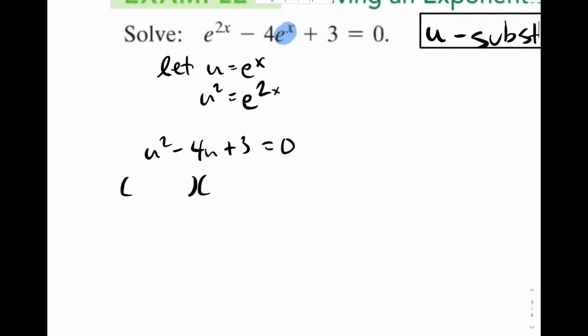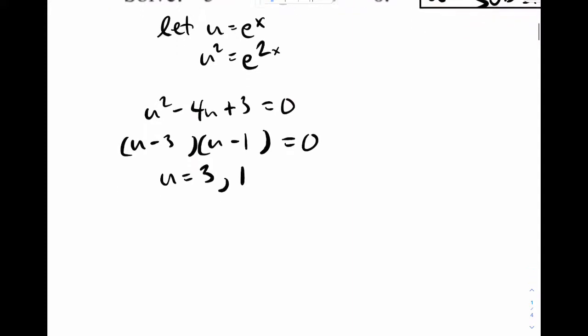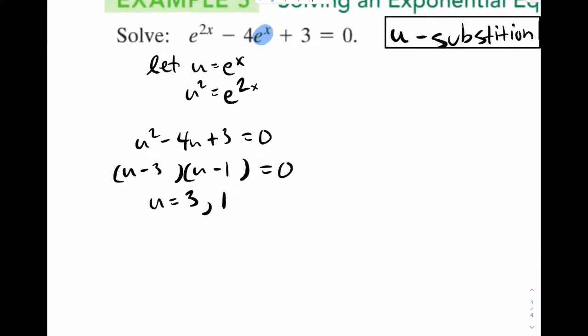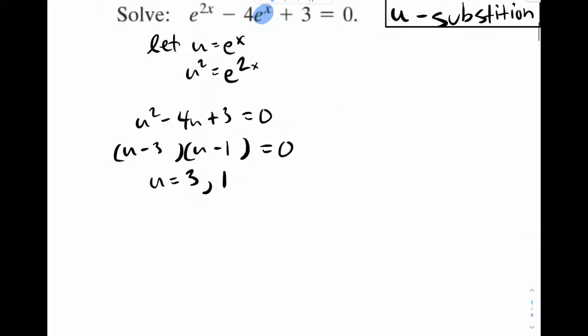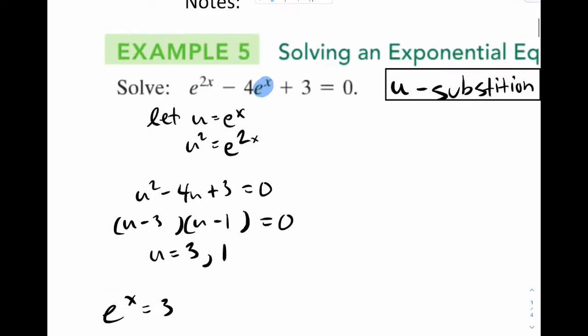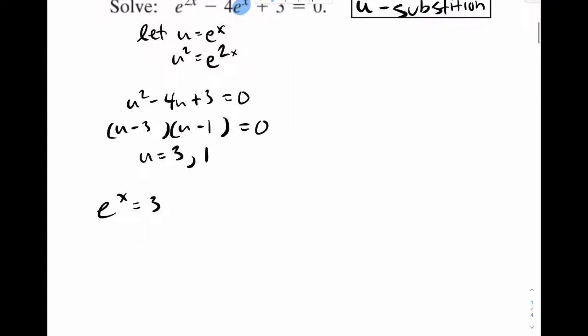Now I can factor this so I get u minus 3, u minus 1. So u should be equal to 3 or 1. Now of course you have to understand that that's not the final answer. You have to write e to the x equals 3 because that was u right here. And draw a line. e to the x equals 1.